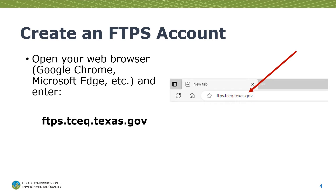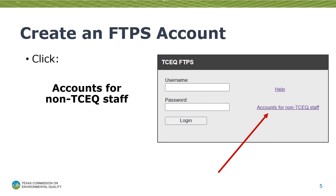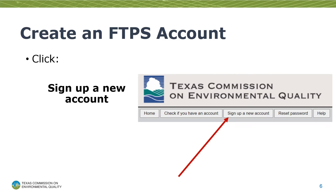To create an account, pull up our website by typing ftps.tceq.texas.gov into your web browser and clicking Enter. Any web browser should work, such as Google Chrome and Microsoft Edge. After it opens, click on the link that says Accounts for Non-TCEQ Staff, and then go to the top of the screen where you'll see five buttons.